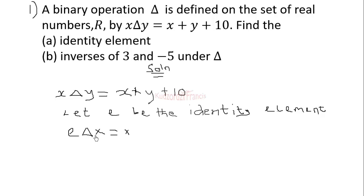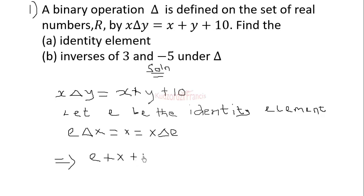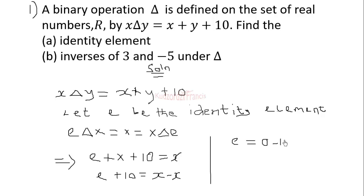Since the operation is commutative, if x operates on e we also get x back. Plugging into the definition: e plus x plus 10 should equal x. Solving for e: e plus 10 equals x minus x equals 0, therefore the identity element is equal to negative 10.